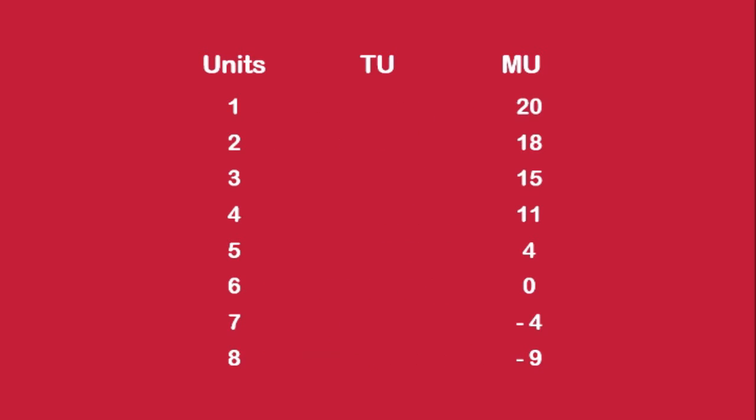Total Utility from the consumption of the first unit of Apple is 20 units — the same as the Marginal Utility. This is true for the first Apple only. To find the Total Utility from two apples, the Marginal Utility of the first Apple and the Marginal Utility of the second Apple have to be added.